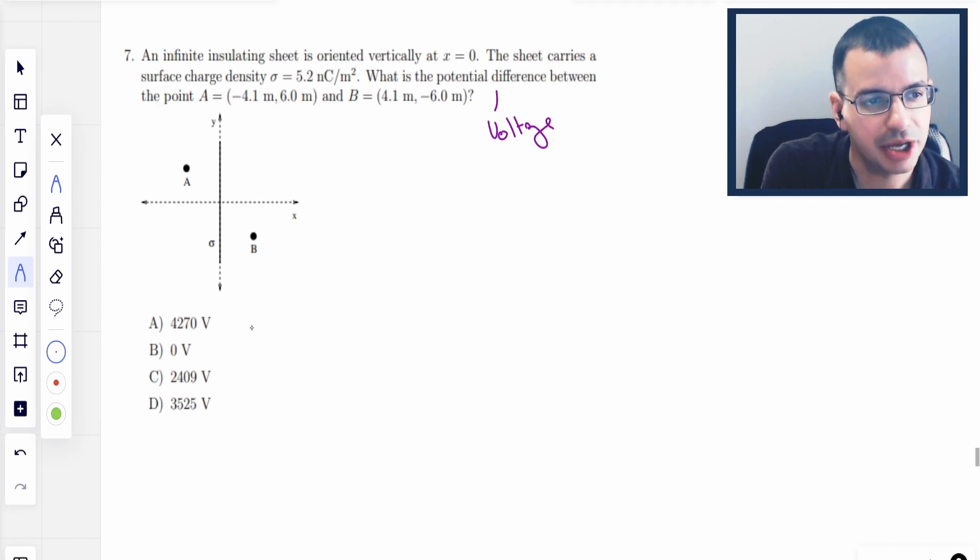And so my first thought process is, when you ever think of infinite insulating sheet, you should think of the electric field. So the electric field is going to be sigma over 2 epsilon naught. Ooh, sigma. There we go. Good call. Good catch.